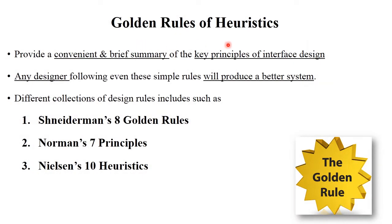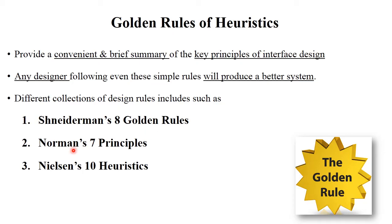Golden rules of heuristics provide a convenient and brief summary of the key principles of interface design. Any designer following even these simple rules will produce a better system. In human-computer interaction, there are different collections of design rules, including Shneiderman's 8 golden rules, Norman's 7 principles, and Nielsen's 10 heuristics. In this video, we will learn about Shneiderman's 8 golden rules, and in my next video we will cover Norman's 7 principles and Nielsen's 10 heuristics.